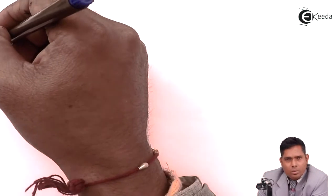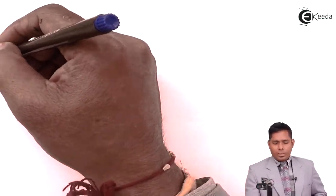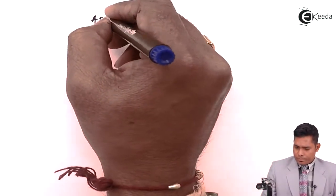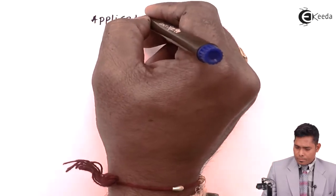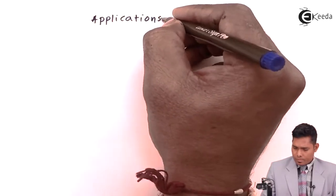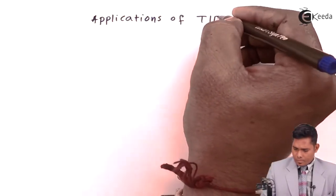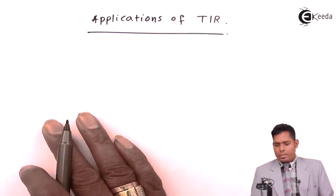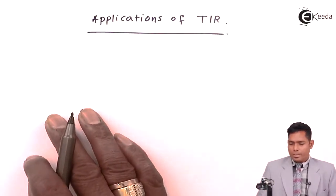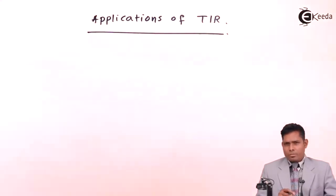Students will discuss the applications of total internal reflection. Total internal reflection means the ray has to be reflected back. Let us first consider what is the critical angle for a glass-air surface.